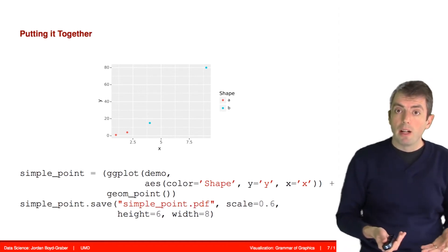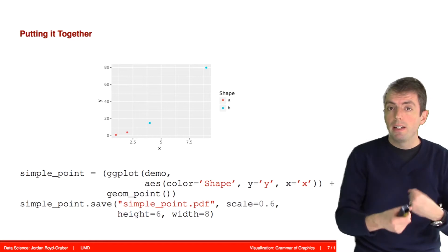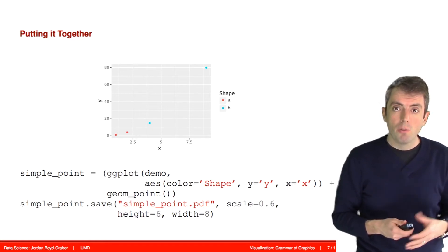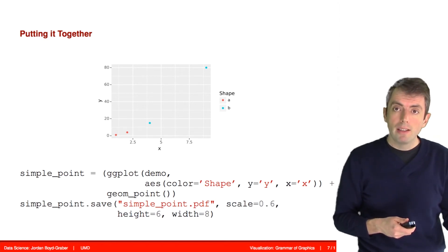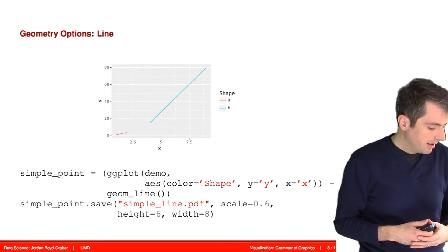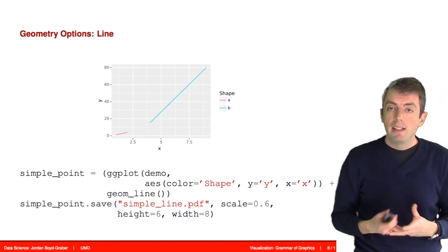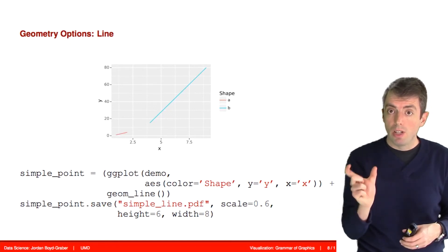The nice thing about the Grammar of Graphics is that you can very easily swap out different components to create very different visualizations. If you want to use something other than points to plot your data, you could do something like plotting a line.